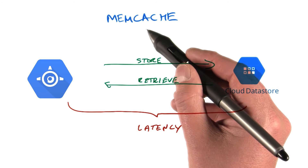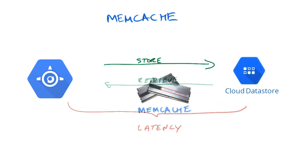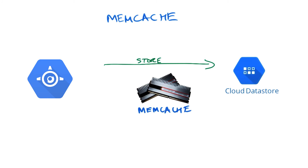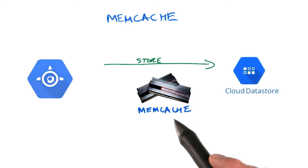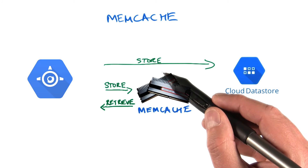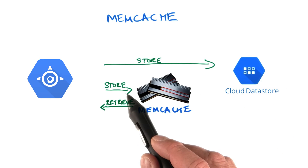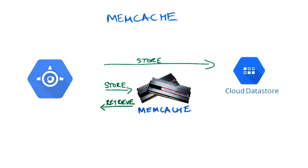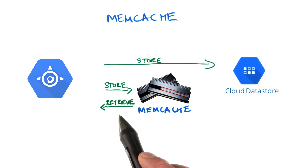This is exactly where memcache comes in handy. Memcache is a memory cache which sits next to your App Engine instances. Any data you store here can be immediately retrieved without having to read from data store. So when you store data in data store, you can also store a copy in memcache, meaning you can retrieve it from memcache later and therefore deliver a response really, really fast.